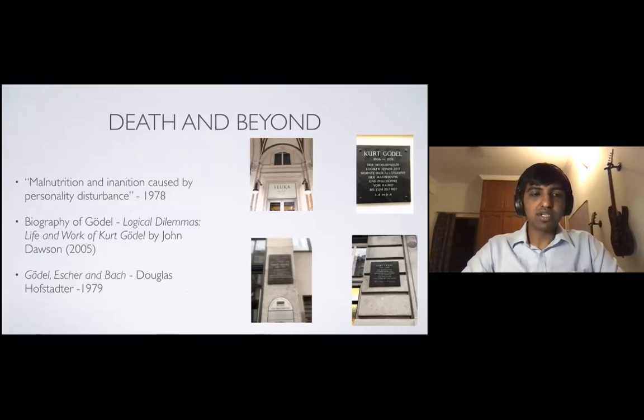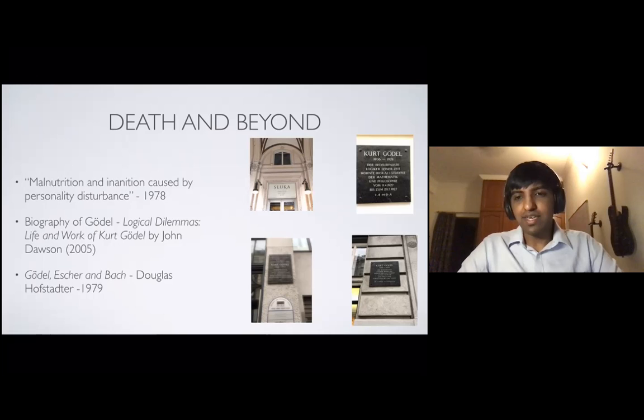So Gödel soon died in 1978 due to malnutrition and inanition caused by personality disturbance. So basically what happened was his wife fell sick and went to the hospital for six months. She was hospitalized and he did not trust anybody else to give him food. So he did not eat and he passed away because of lack of food and malnutrition. He weighed only 20 kilograms or something when he died. So yeah, strange way for someone to die, but that's what happened.